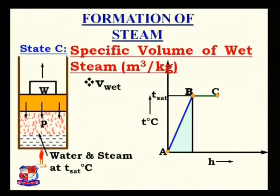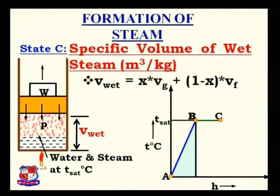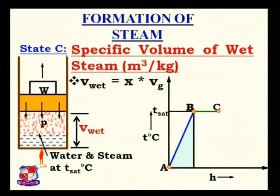Specific volume of wet steam, V_wet, is the volume of the mixture of water and steam, with units of m³/kg. It is calculated using the equation: V_wet = x × VG + (1 − x) × VF, where x is the dryness fraction, VG is the specific volume of 100% steam, and VF is the specific volume of 100% saturated water. Since (1 − x) × VF is numerically very small, it can be neglected, giving V_wet ≈ x × VG.